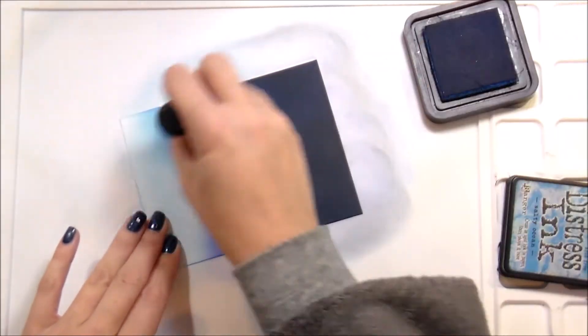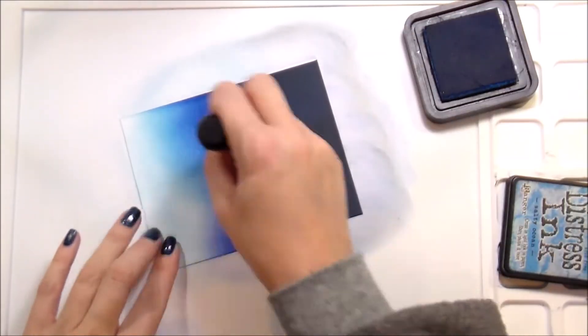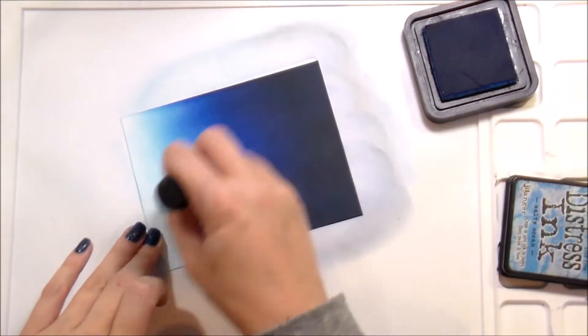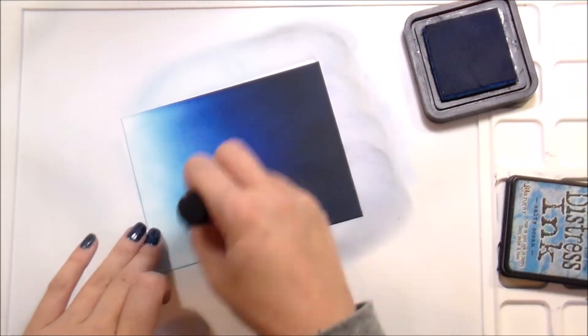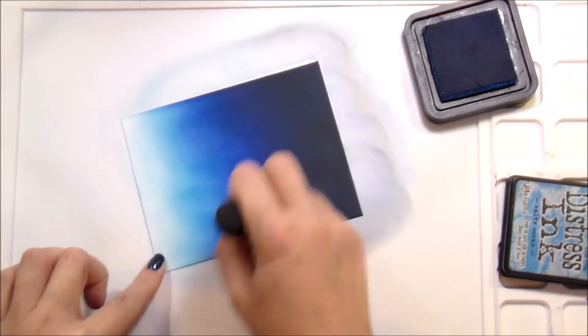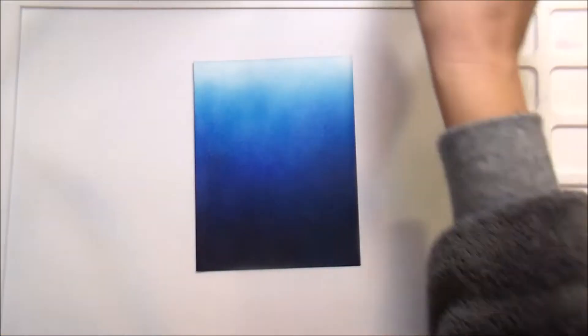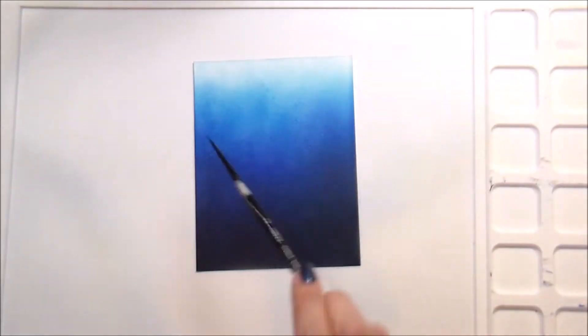I did want you to see how it changes when you add that second layer in case this is the first time you're watching one of my videos. You may be new here. For the top of it, the Salty Ocean, I'm going to do it pretty heavily saturated where it's blending into the Blueprint Sketch, but I'm still trying to leave the edges or the very top edge light.